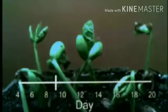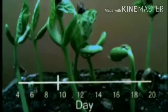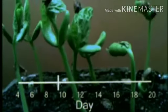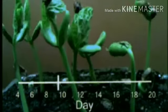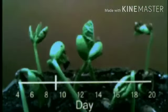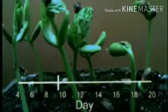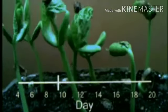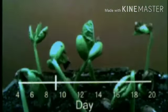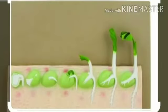The process by which seeds grow into a new plant is known as germination. Seeds do not grow into a new plant unless they get favorable conditions. The favorable conditions are water, air, and proper temperature. When a seed gets favorable conditions, it starts sprouting.